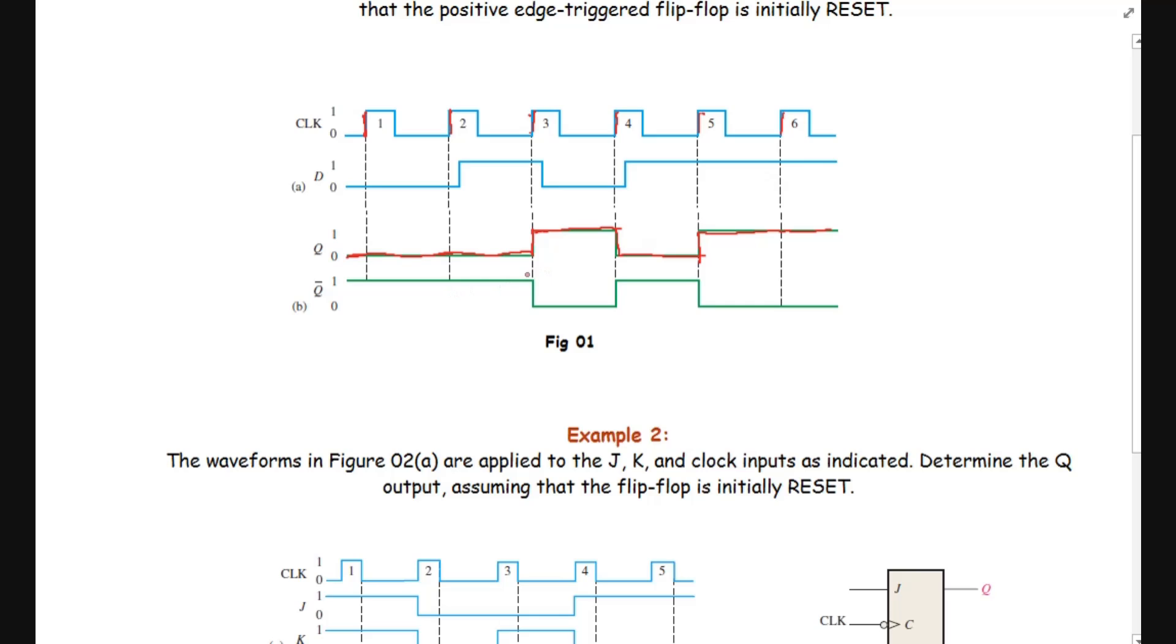It will remain high and continue at the sixth pulse because the data is again high. The Q' output will be exactly opposite to this one. By flipping this signal, we can obtain the waveform for Q'.